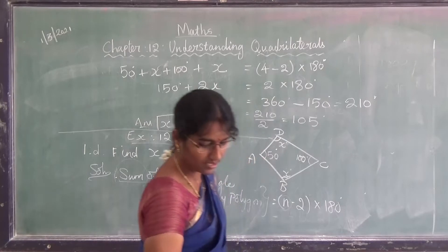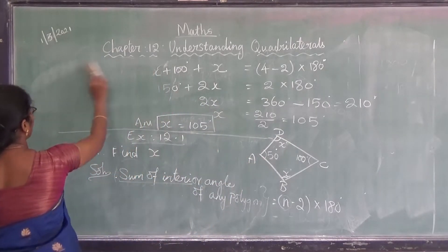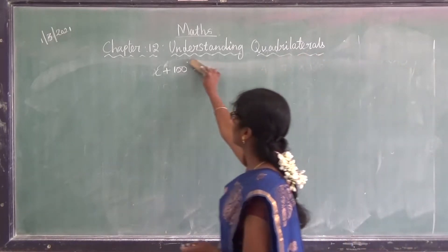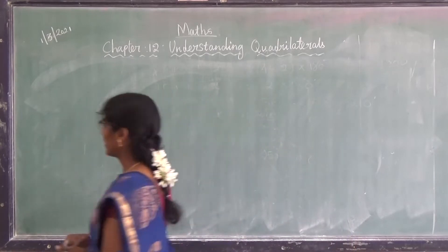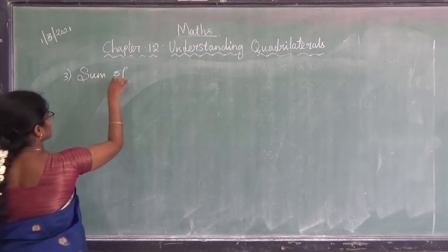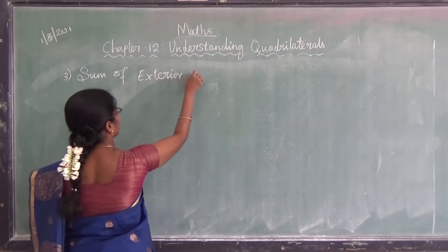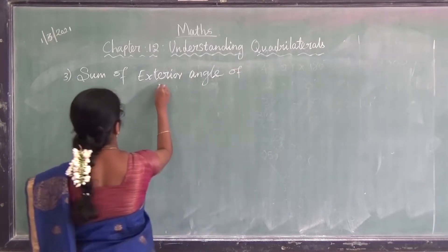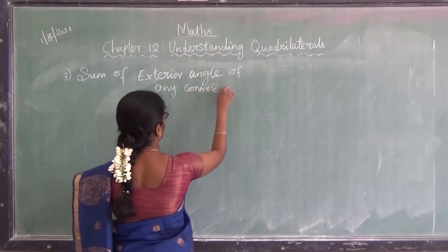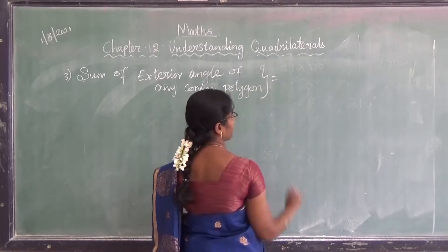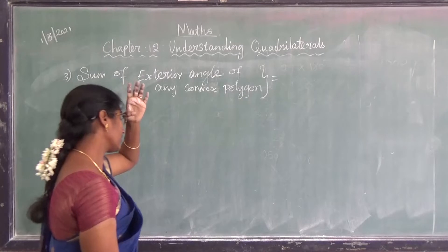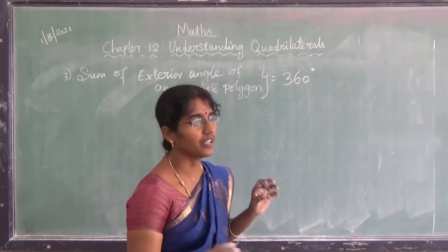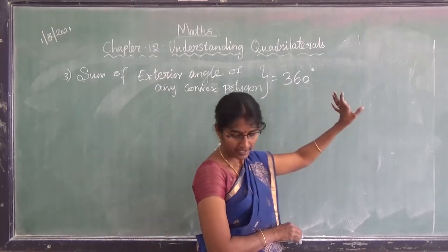The next thing is finding the sum of exterior angles of a convex polygon. Exterior angles are the angles present at the outside of a polygon. The sum of exterior angles of any convex polygon is always equal to 360°. If we add all the exterior angles of any convex polygon the answer must always be 360°.